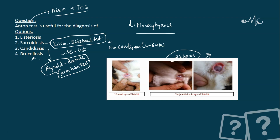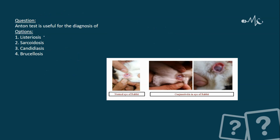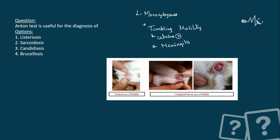The Anton test is useful for the diagnosis of listeriosis, caused by Listeria monocytogenes. For MCQ and exam purposes, Listeria has a characteristic tumbling motility. It is also an example of a catalase-positive organism.